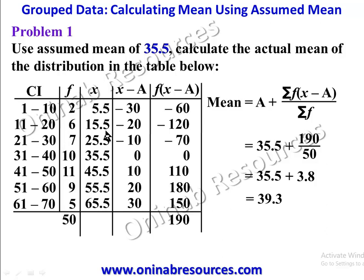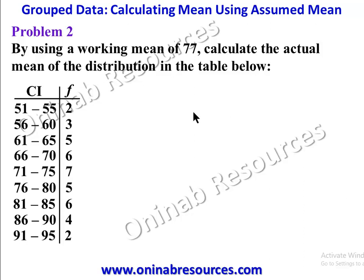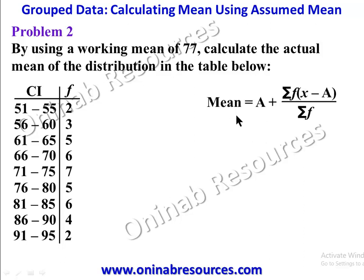That completes Problem 1. For Problem 2, using a working mean of 77 — note that assumed mean and working mean refer to the same thing — we calculate the actual mean of the distribution. The table has class intervals from 51–55 up to 91–95 with corresponding frequencies. We again apply the assumed mean formula and need additional columns for x, x minus a, and f times (x minus a).